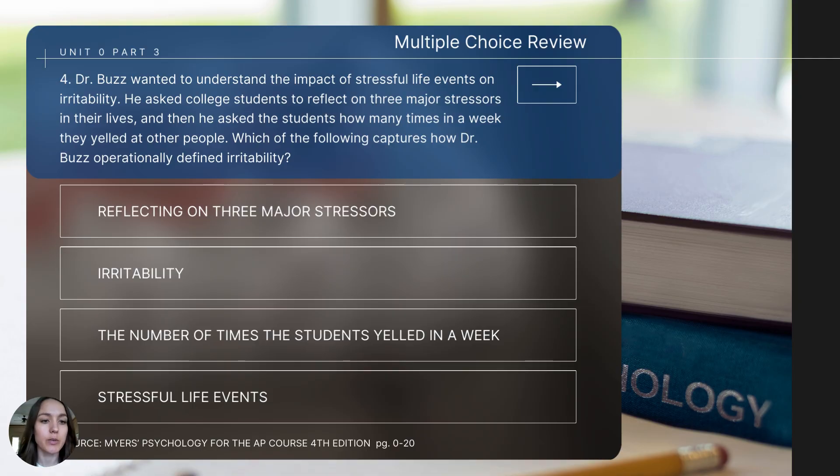Question number four says, Dr. Buzz wanted to understand the impact of stressful life events on irritability. He asked college students to reflect on three major stressors in their lives. And then he asked the students how many times in a week they yelled at other people. Which of the following captures how Dr. Buzz operationally defined irritability?